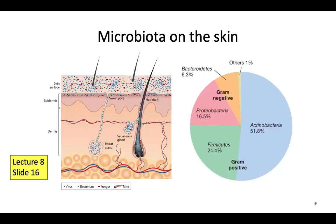This slide is from lecture 8, slide number 16, which covers the microbiome. What you need to remember is the different microbiota on the skin. The highest number of bacteria on the skin is Actinobacteria, and they are Gram-positive. In terms of Gram-negative bacteria, Proteobacteria are the most common type found on the skin.